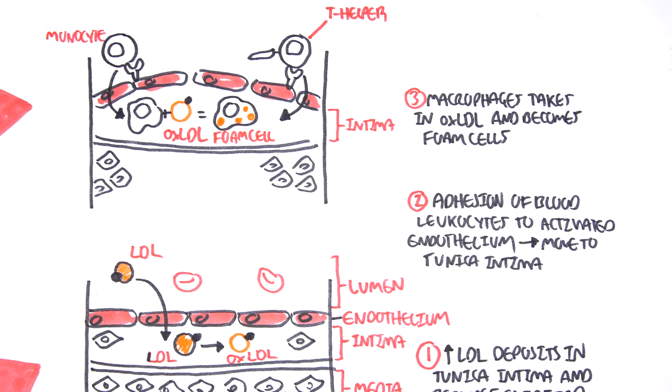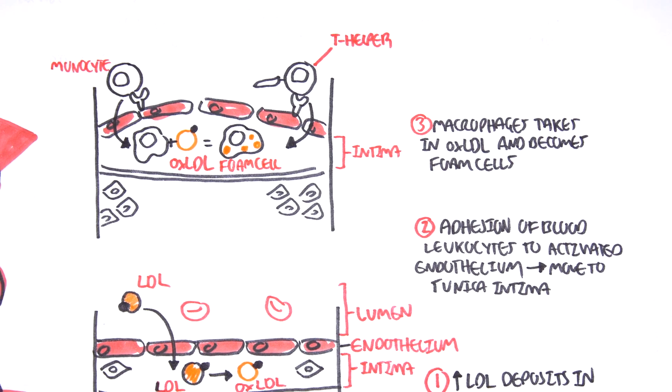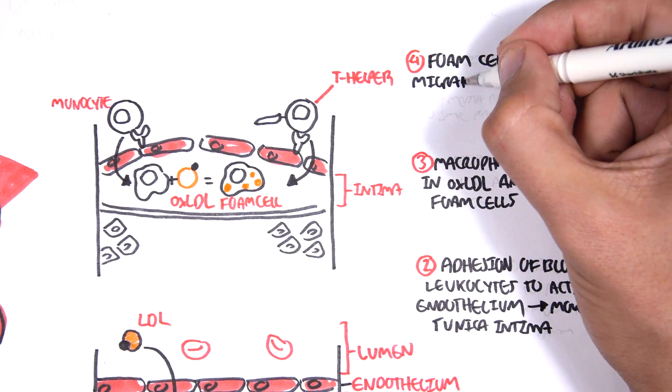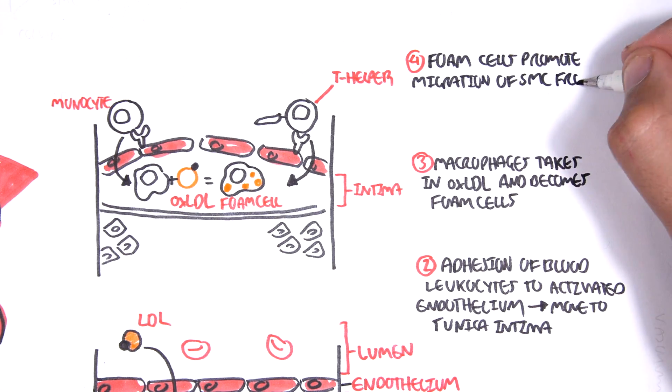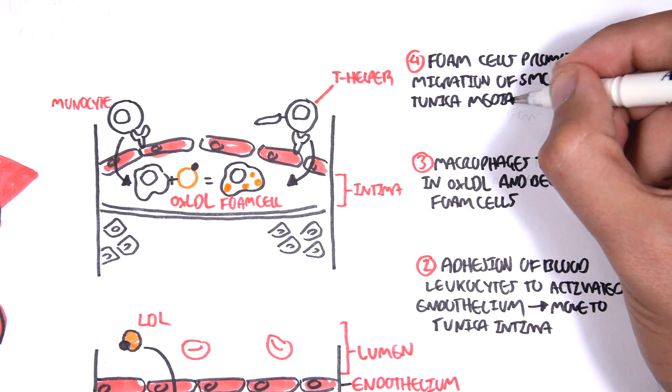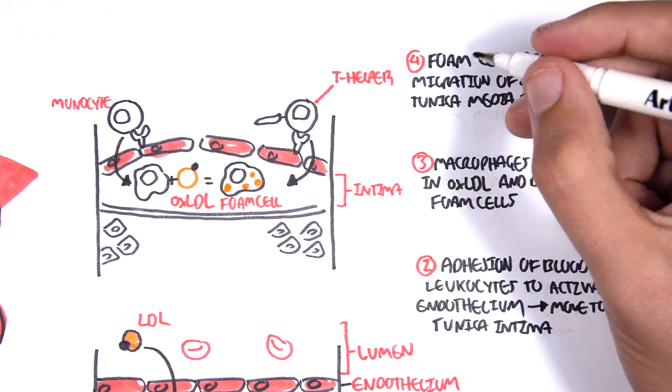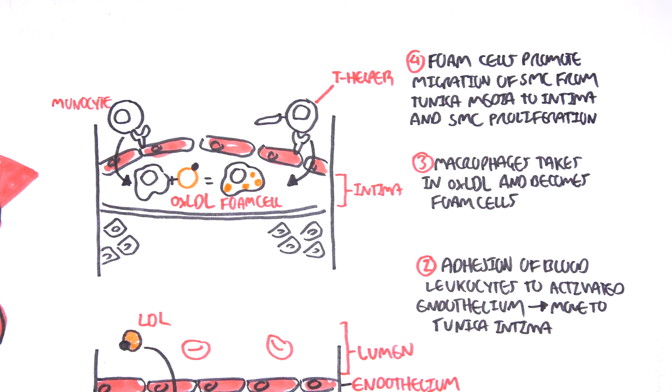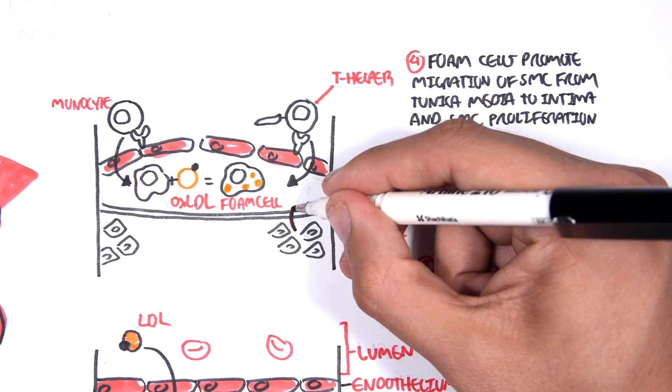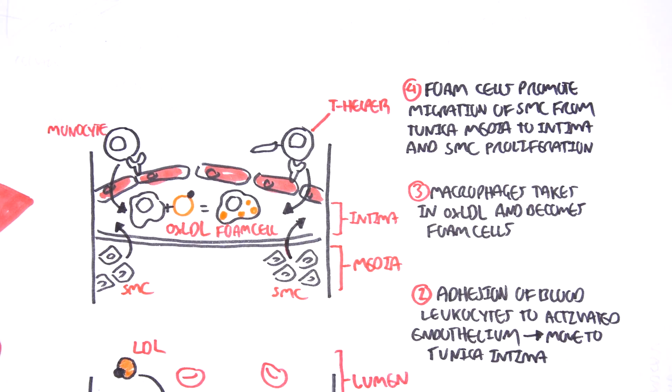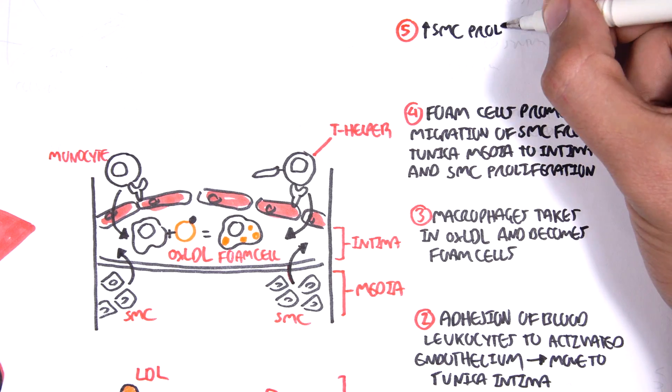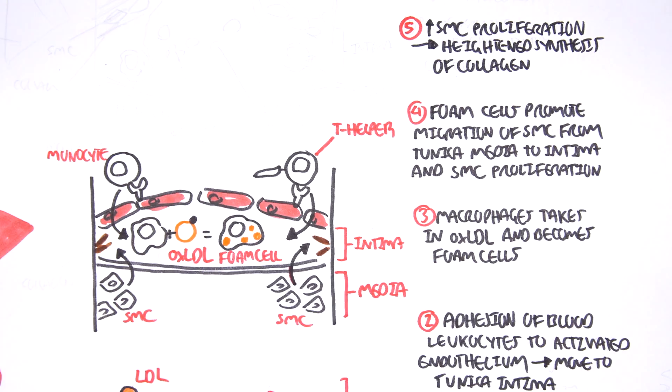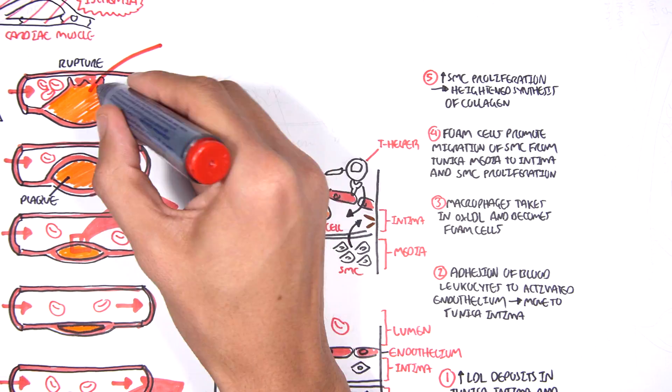Foam cells do many things, one of which is it promotes migration of smooth muscle cells from the tunica media into the tunica intima and also promotes smooth muscle cell proliferation. An increase in smooth muscle cell proliferation heightens or increases synthesis of collagen, which can lead to hardening of the atherosclerotic plaque.